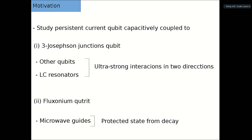This is the outline of the talk. In the first part, we are going to study three-Josephson-junction qubits coupled to other qubits and to LC resonators. We are going to show that there are two directions that we can couple ultra-strongly: for two qubits, we show ultra-strong coupling in almost two directions. Then in the second part, we couple a fluxonium to a waveguide and see that it gives an interesting model with a quite well-protected state from decay.